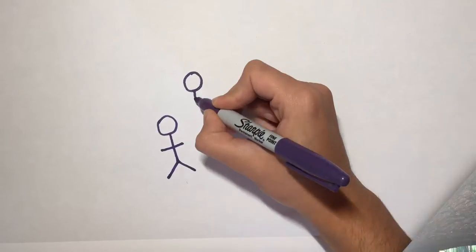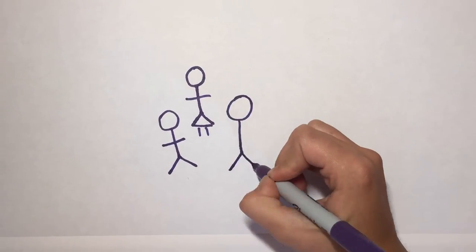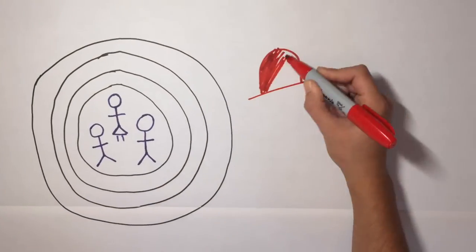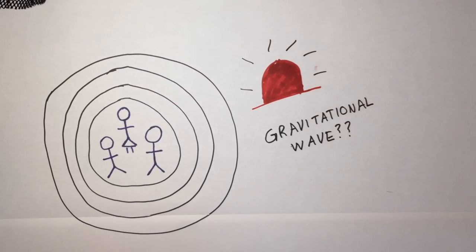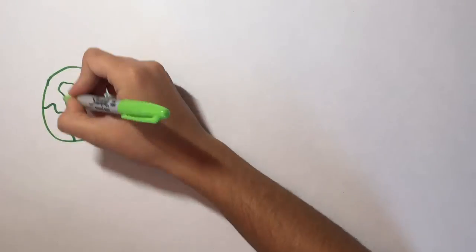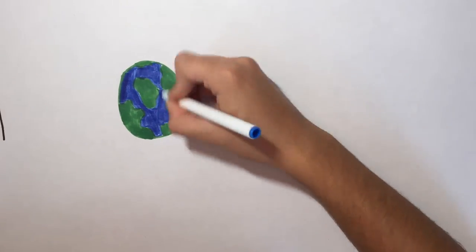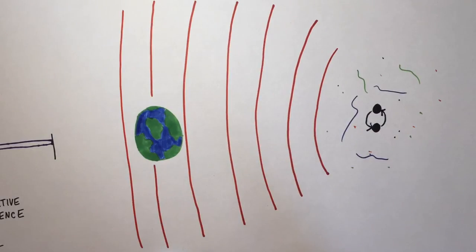One huge problem was that gravitational waves are so tiny that a machine had to be built that was sensitive enough to detect these tiny shifts on the Earth. Another obstacle was that there is so much background noise on Earth that could mimic the results of a gravitational wave. The detector created had to be able to isolate gravitational waves coming only from space.